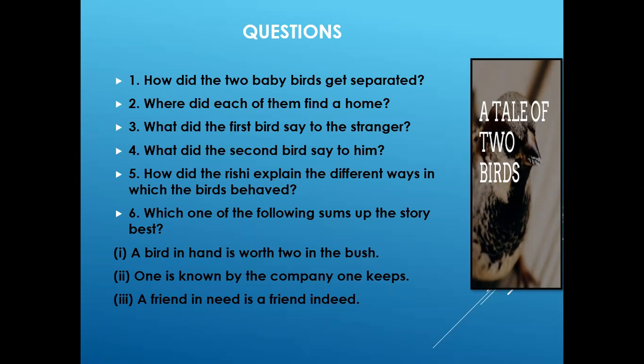Where did each of them find a home? One of the baby birds landed near a cave where a gang of robbers lived. The other baby bird landed outside a Rishi's ashram, a little distance away. And so they both found two different homes.